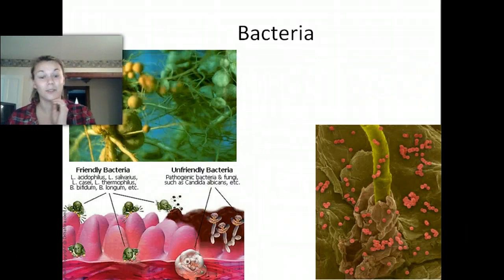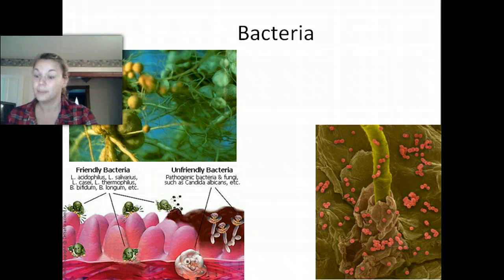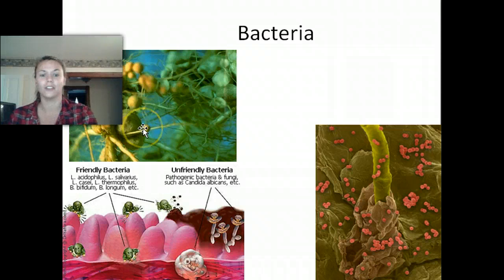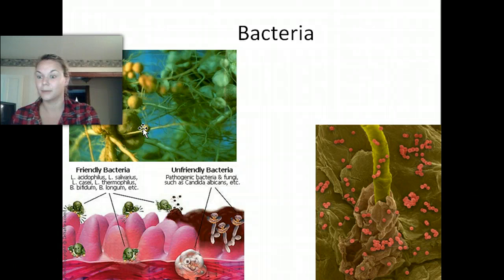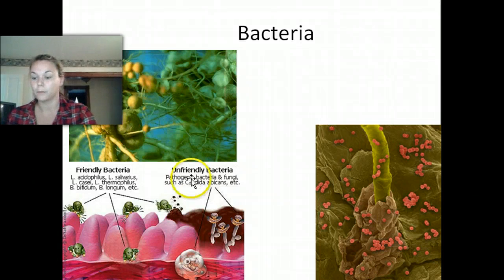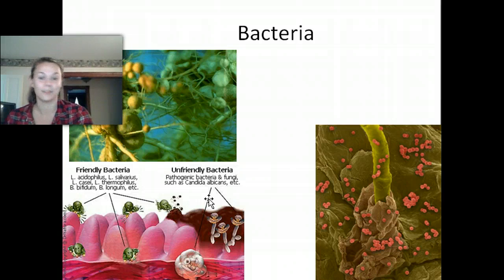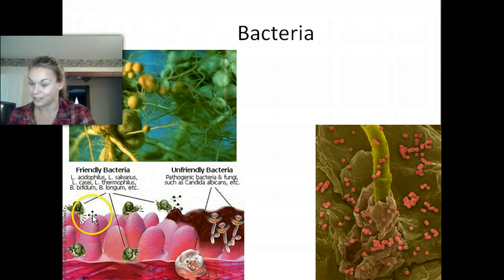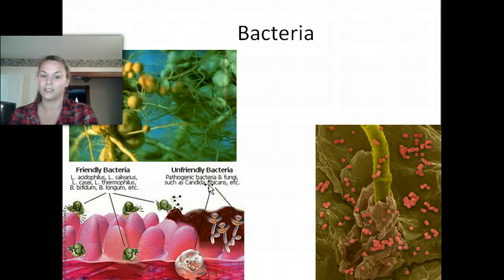However, bacteria do a lot of good stuff too. In this picture we have structures called nodules, found on the roots of plants — we're going to talk more about those a little later. We also have a picture of some digestive bacteria. We forget that sometimes there's bacteria living inside our digestive system: friendly bacteria that are supposed to be there, and unfriendly bacteria too. Most of the bacteria found in your digestive system is in fact friendly.